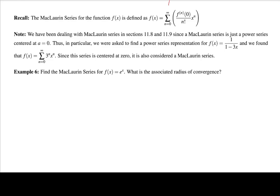A Maclaurin series is literally just a Taylor series where a equals 0, so we see f^(n)(0) in the formula, and (x minus 0)^n simplifies to x^n. We've actually been dealing with Maclaurin series in earlier sections, since they're just power series centered at a equals 0 where we write out the formula for cₙ. For example, the power series representation for 1 over (1 minus 3x) that we found earlier is a Maclaurin series.